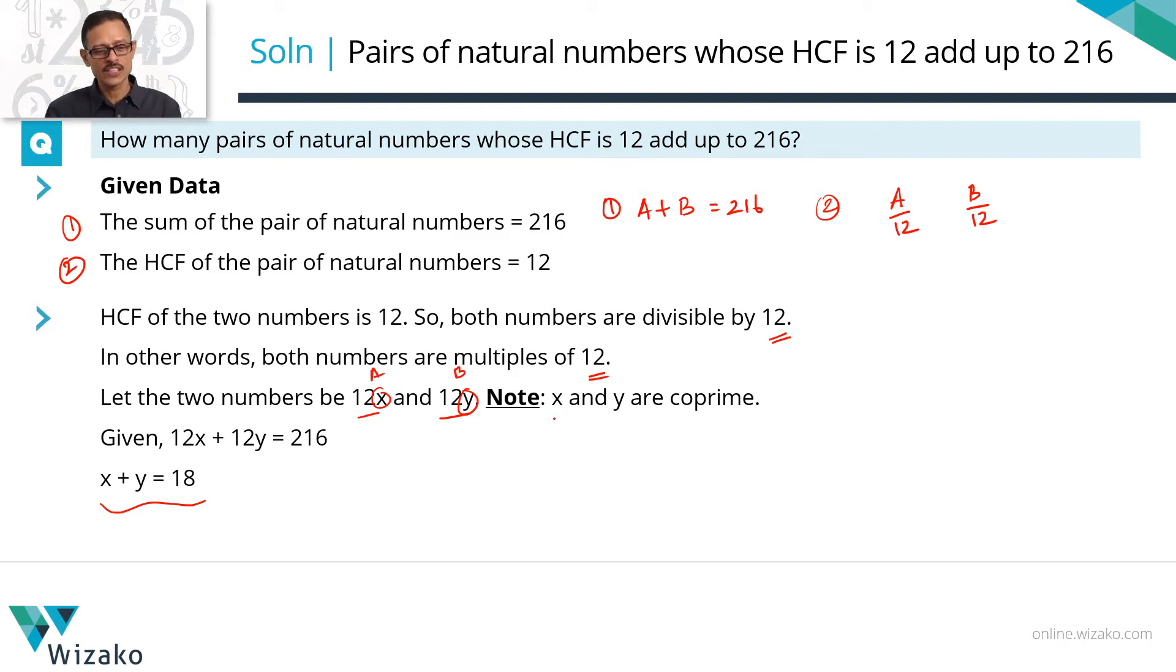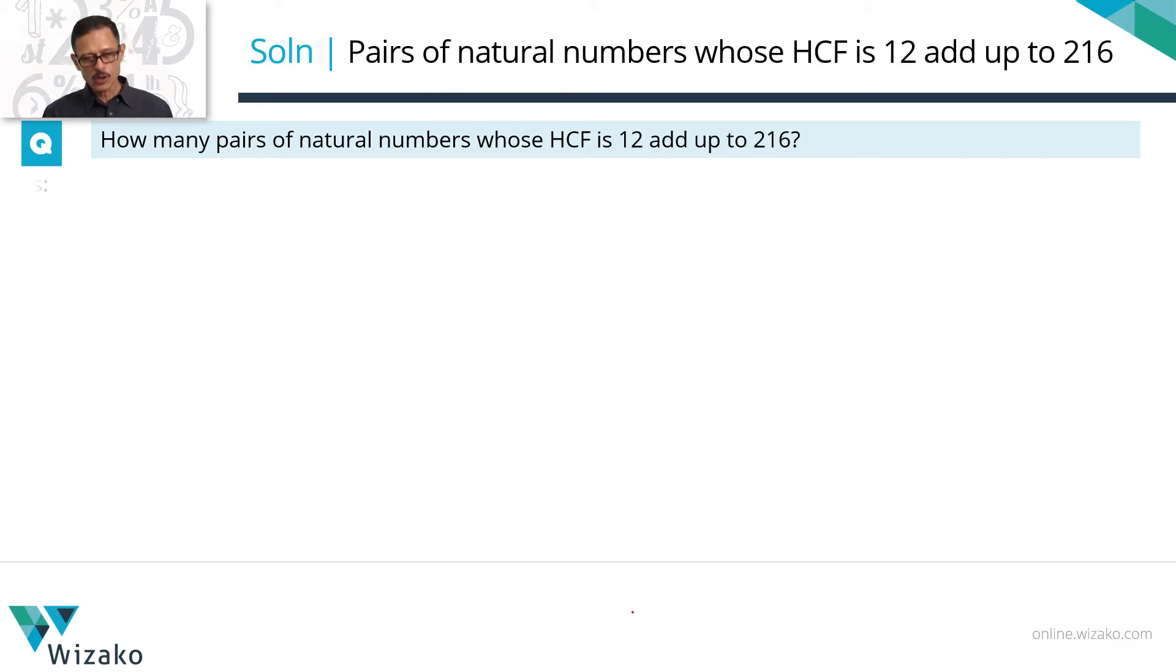The second condition that they should satisfy is that the HCF of both x and y should be 1. Let's list all possible values for which x and y will add up to 18 first. Let's get there and then in the second step, shortlist those numbers which have an HCF of 1.